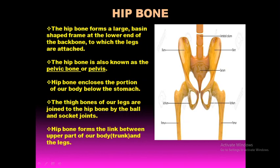The hip bone is not a single bone. It is made up of numerous bones which are fused together by fixed joints. The portion of our body below the stomach is enclosed by the hip bones, and it is also the part of the skeleton that helps us to sit.